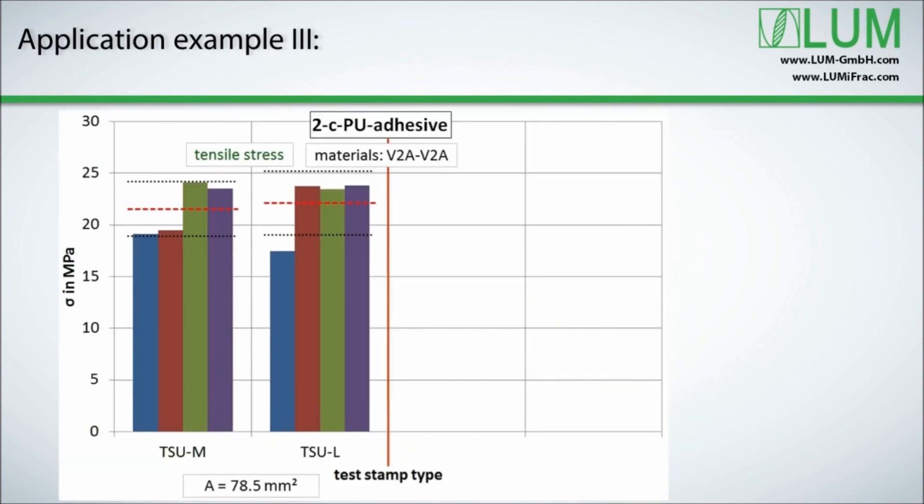Our next example shows a measurement that was carried out to compare strength results with the provided data of the adhesive manufacturer, which were determined by using common ISO and DIN standards. Measurements such as this are important for incoming goods inspections, especially for sensitive applications like in aviation, car or aerospace industry. The used adhesive was a polyurethane adhesive bonded to stainless steel.